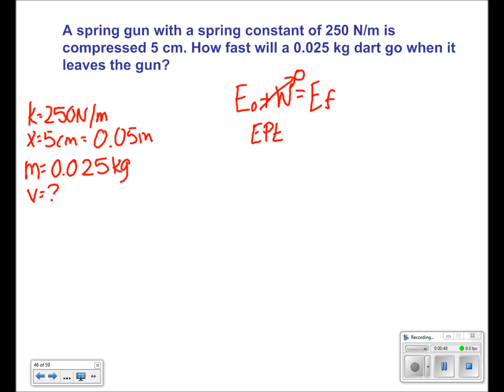So EPE, which is our initial energy, is equal to KE, which is our final energy. So 1/2 kx² is equal to 1/2 mv². Since we have 1/2 on both sides, we can cross that out.